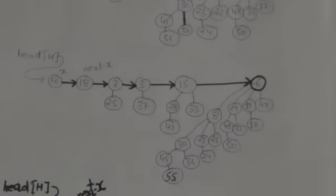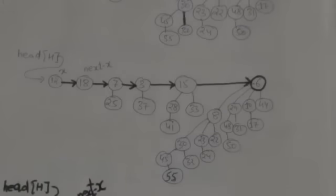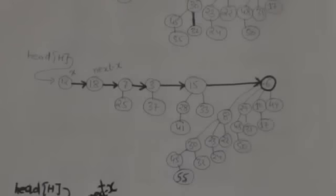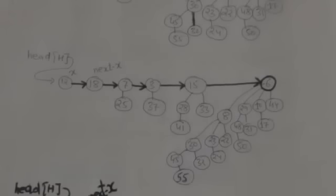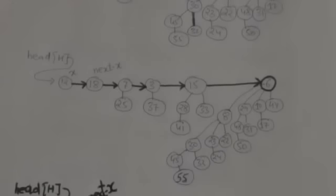We will start from the first root of the root list, so pointer x will point to the first root of the root list. Since x points to the first root, it doesn't have any predecessor, so the pointer previous x will be set to nil. Now in this root list we have to link the roots having the same degree. There are a few rules by which we will link the roots of same degree.